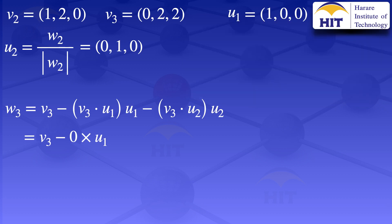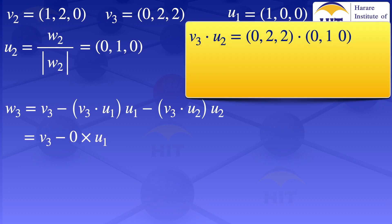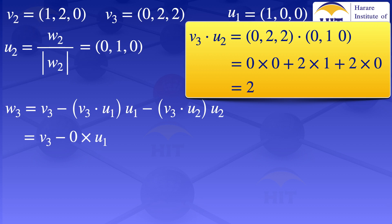Now we evaluate the inner product of V3 and U2. V3 is (0, 2, 2) and U2 is (0, 1, 0). The inner product is 0·0 + 2·1 + 2·0 = 2. Substituting into the formula for W3, this gives minus 2·U2.